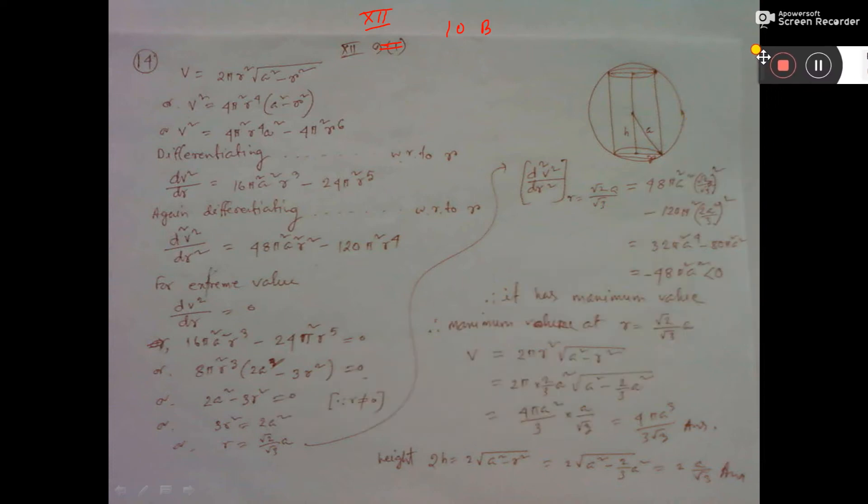A cylinder is inscribed in a sphere of radius A. So this is the sphere's radius. The volume of the cylinder V is equal to 2πr²√(A² - r²), that is the function given, where r is the radius of the base of the cylinder.